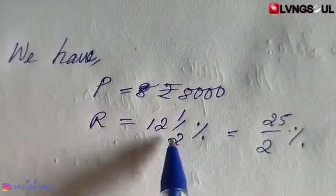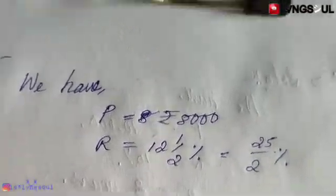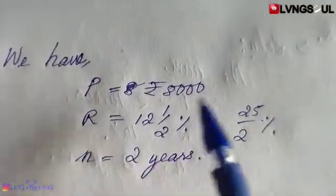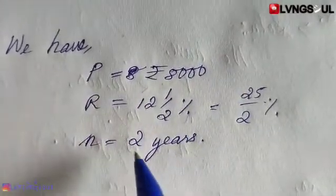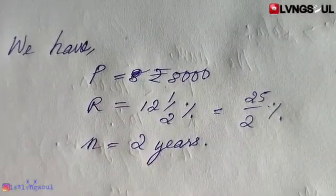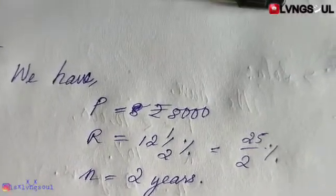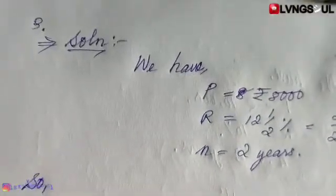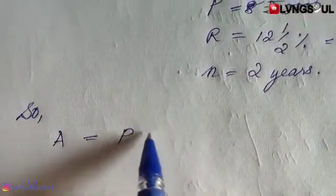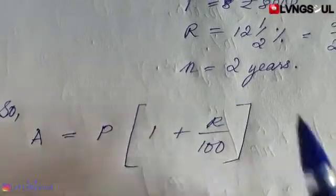12.5 percent — this is 24 plus 1, which is 25, as the numerator, and 2 as the denominator. So 12.5% = 25/2. N is equal to 2 years. The formula is: Amount = P into 1 plus R by 100, raised to the power of time.